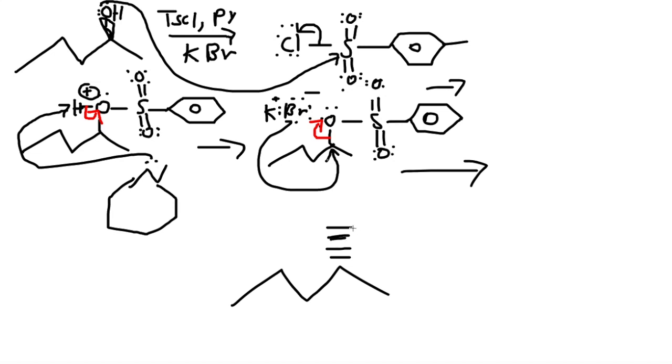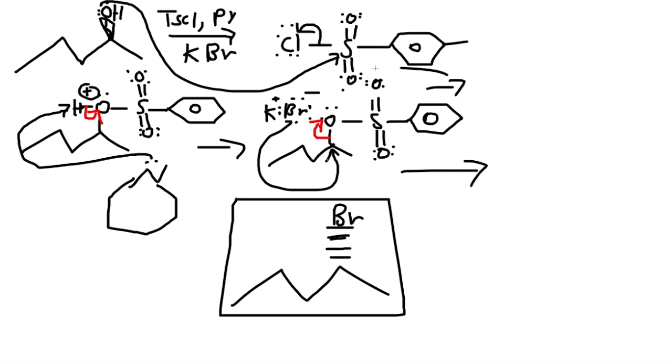Now we have our third reagent come in: KBr. Potassium has the positive charge, bromine has a negative charge because it is more electronegative. This bromine comes and does a backside attack because this is an SN2 reaction and kicks off this whole structure, which will give us a final product on a dash because it's an SN2 reaction and an inversion has happened. Again, you can do the resonance for this whole structure - resonance does happen if your professor asks for it. But this is the final answer for this problem. Inversion has happened and this is an SN2 reaction. We have used TSCL, pyridine, and our KBr reagent.